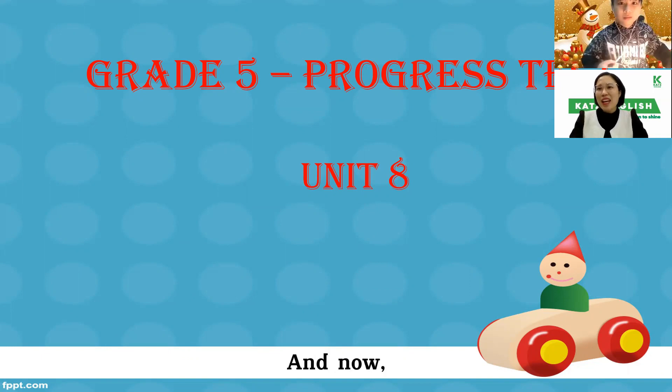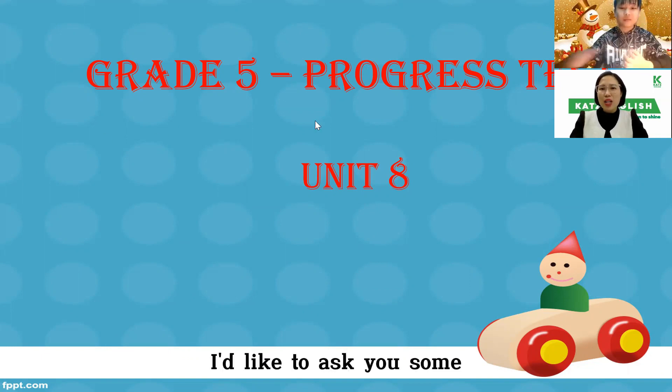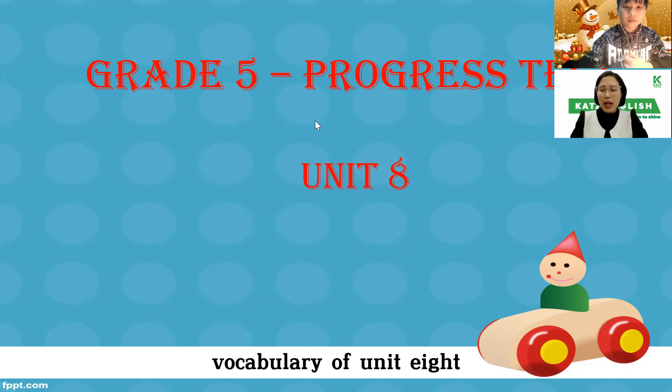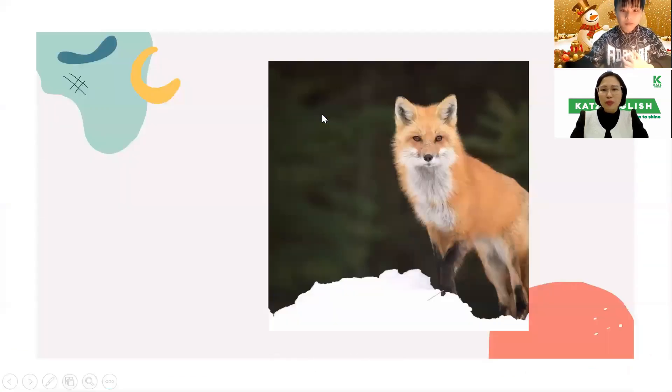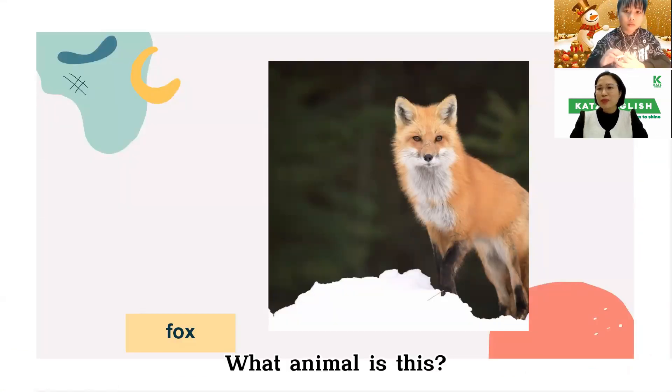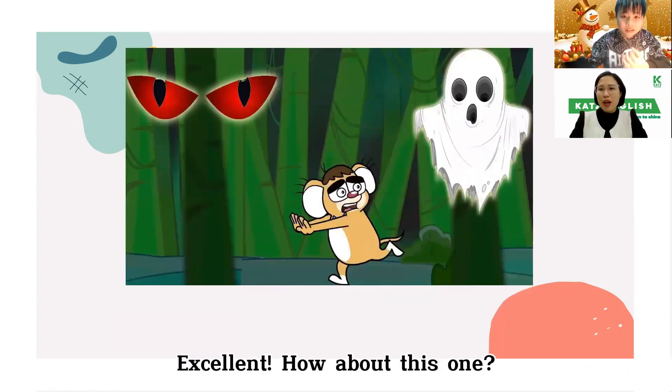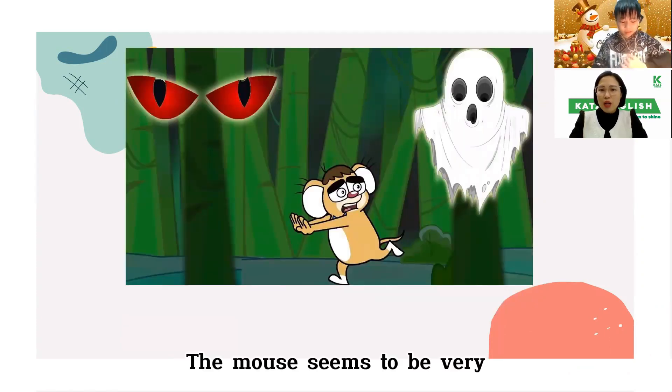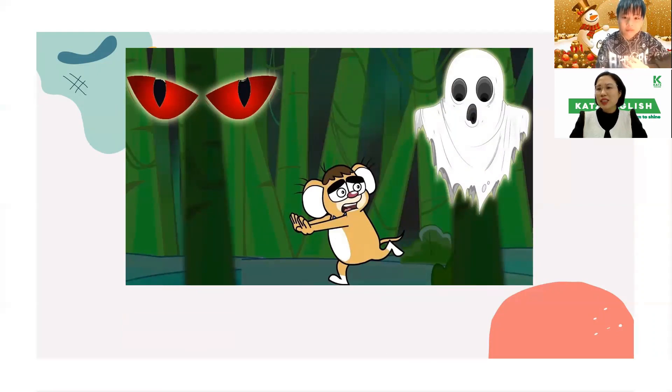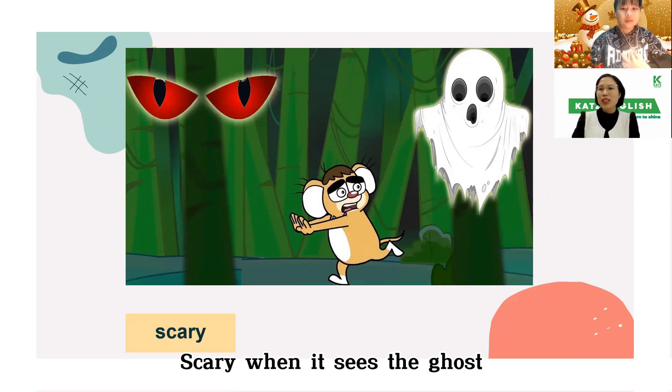Good. And now I'd like to ask you sample vocabulary of unit 8. The first one, what animal is it? It's a fox. Excellent. And how about this one? The mouse seems to be very scary when it sees the ghost.